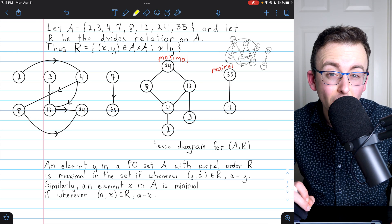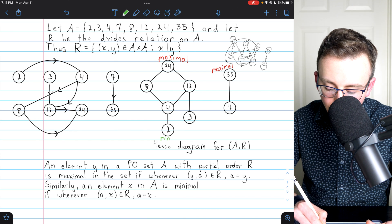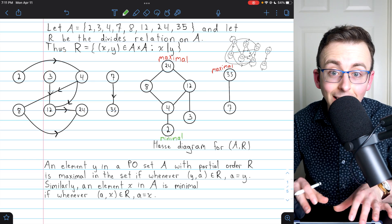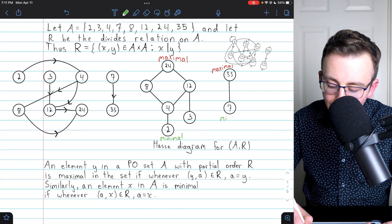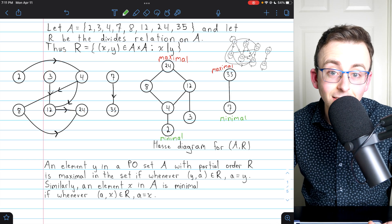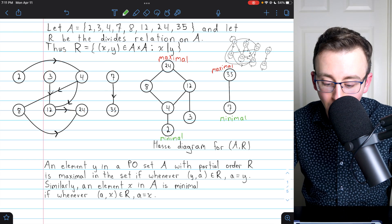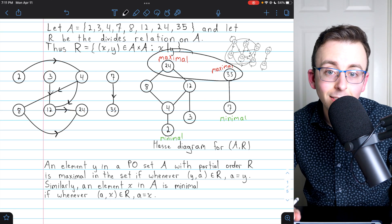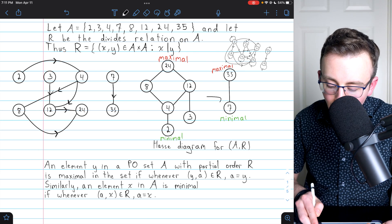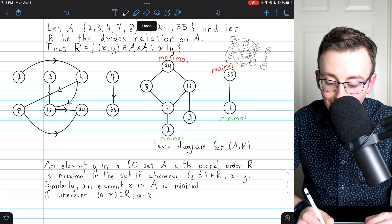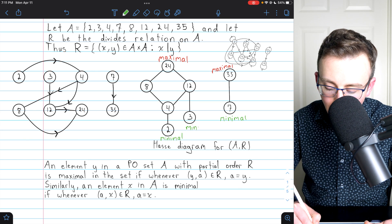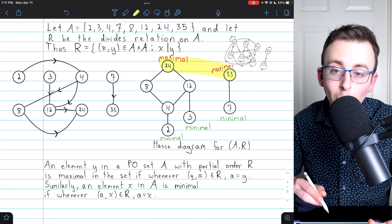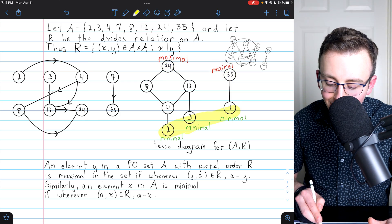Now what about the minimal elements? Can you spot those? Hopefully you guessed that 2 is a minimal element because nothing relates to 2. You can't go up to 2 except for the fact that 2 relates to itself. Similarly, 7 is a minimal element because no element relates to 7 except itself. So long story short, the maximal elements of a partially ordered set appear at the top of the components of a Hasse diagram, and the minimal elements appear at the bottom. And in fact, 3 is a minimal element here as well, because again, no element relates to 3 except itself. Maximal elements appear at the tops of components, and minimal elements appear at the bottoms.